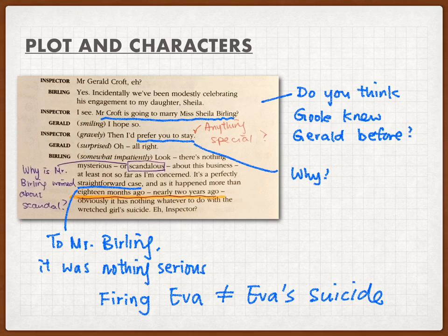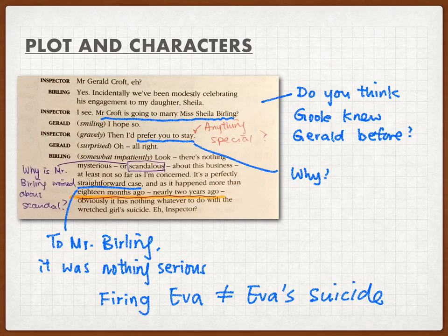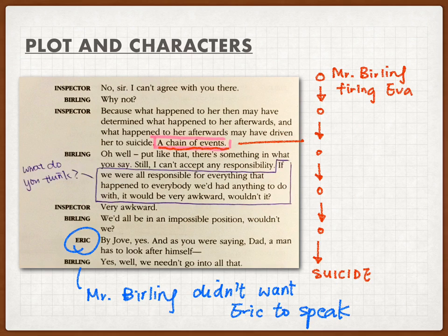That was when the inspector realized who Gerald was. Suddenly the inspector was very serious, saying he preferred Gerald to stay as well because he was going to question him. Gerald was surprised. Mr. Burnley was getting impatient because he thought it was a scandal that would affect his knighthood. To him, firing a worker was something very simple, not complicated, and it happened almost two years ago — so he thought he should not be responsible for the girl's death. But the inspector didn't agree.